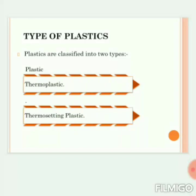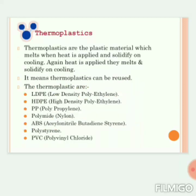Plastic are classified into two types: thermoplastic and thermosetting plastic. Thermoplastics are plastic materials which melt when heat is applied and solidify on cooling. Again, when heat is applied it melts, and solidifies on cooling. So thermoplastic is essentially a cyclic process — meaning thermoplastic can be reused, or we can say thermoplastic is remoldable.